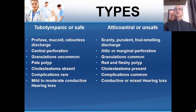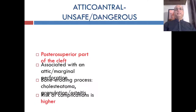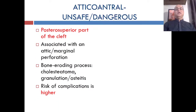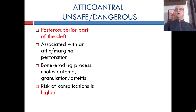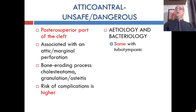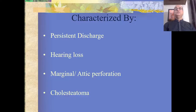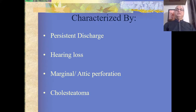Comparing Tubotympanic and Atticoantral types: the Atticoantral type is unsafe or dangerous because it involves the posterosuperior part of the middle ear cleft. It is associated with an attic or marginal perforation, is a bone-eroding process due to cholesteatoma, granulations, or osteitis, and the risk of complications is higher. It is characterized by persistent or intermittent scanty, foul-smelling discharge, occasionally blood-stained, with hearing loss.